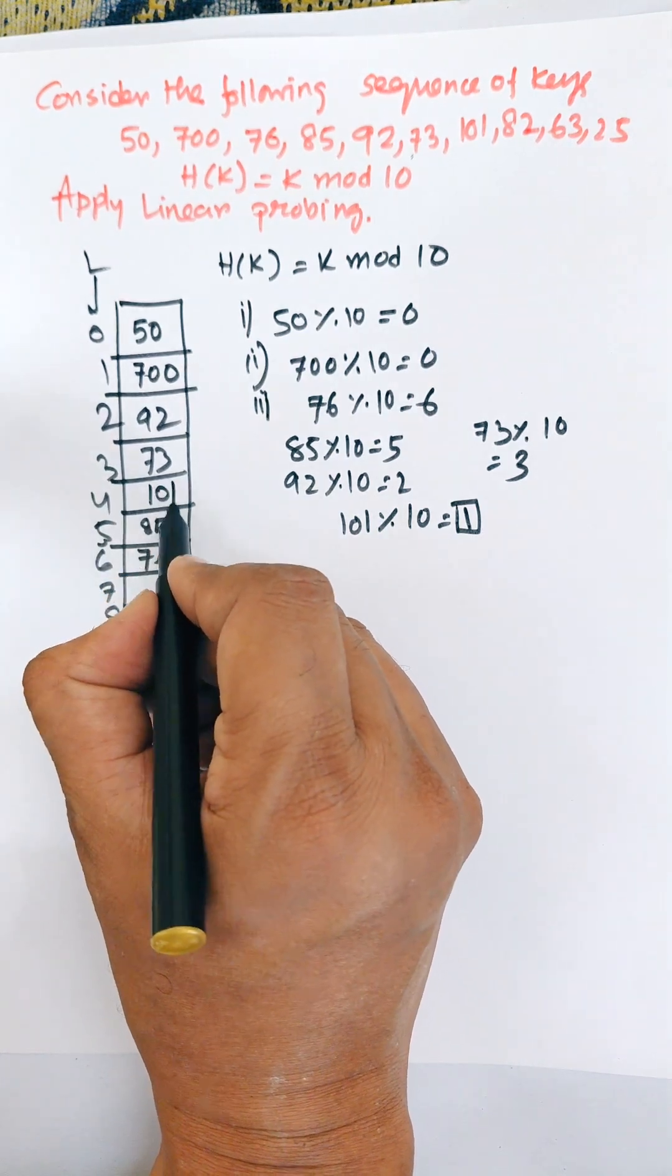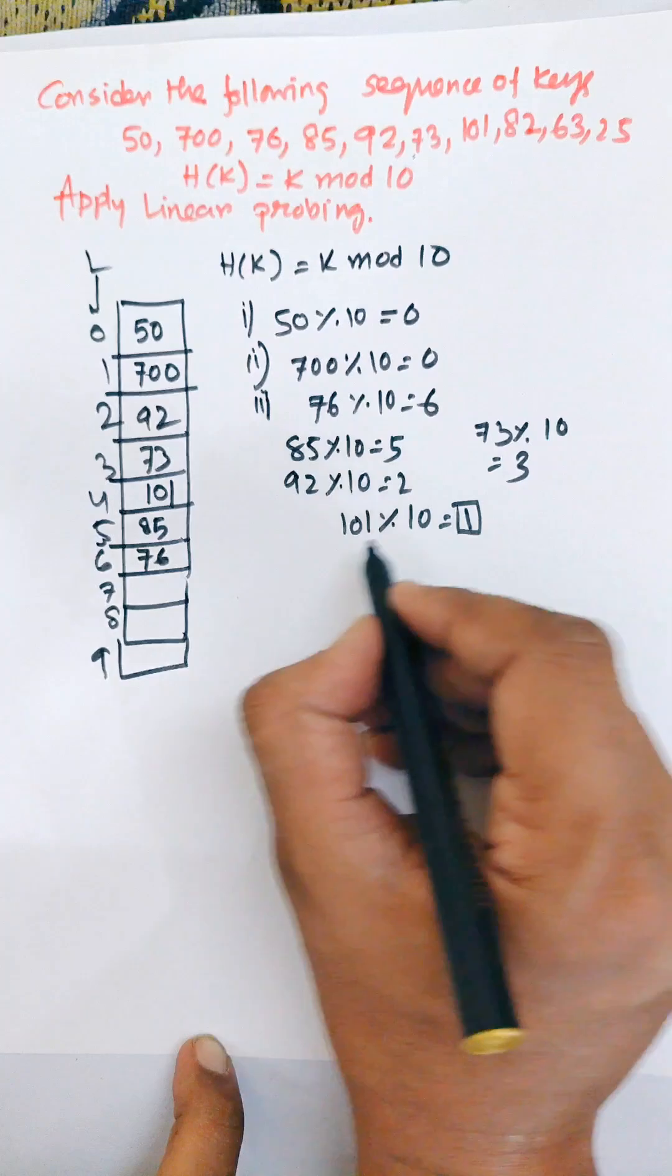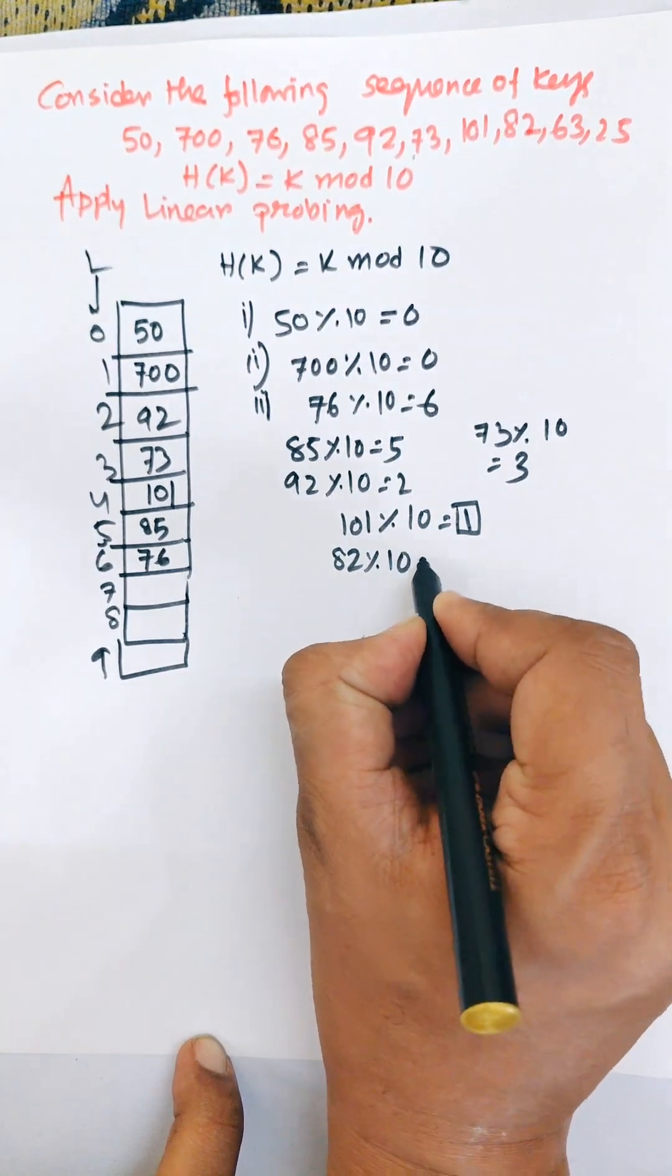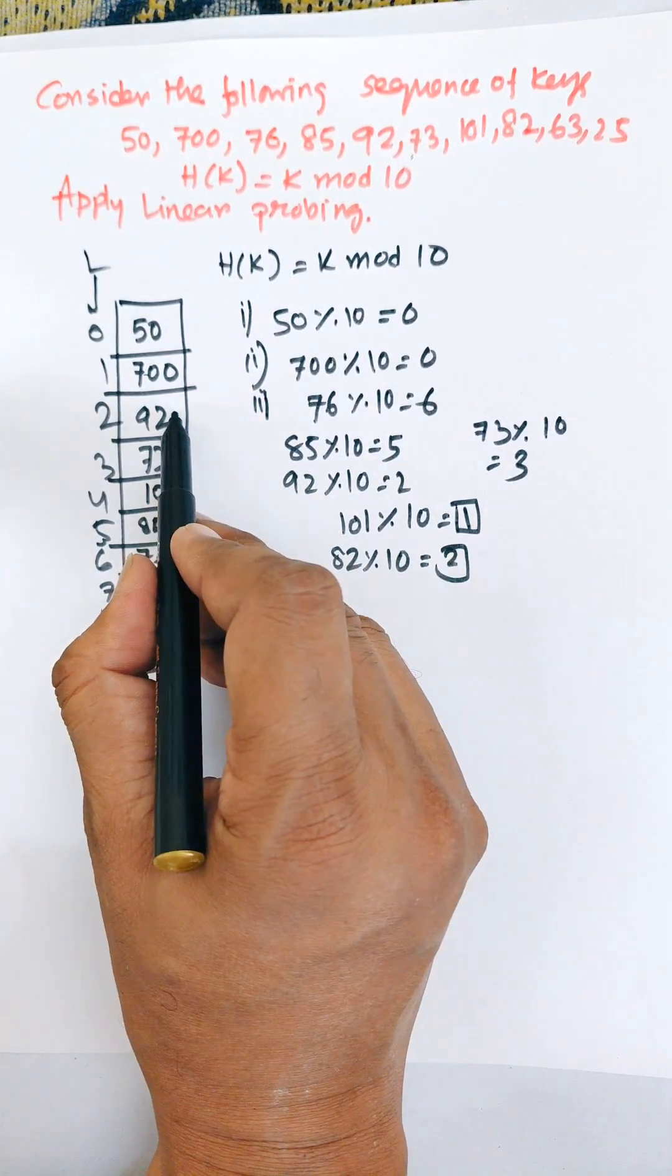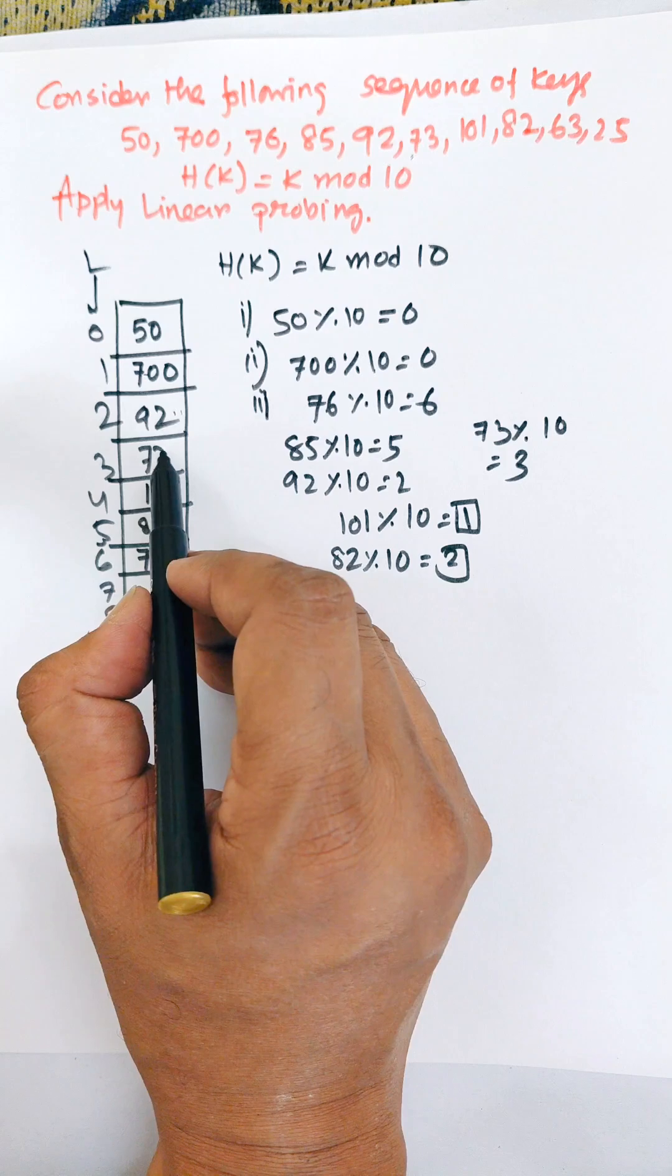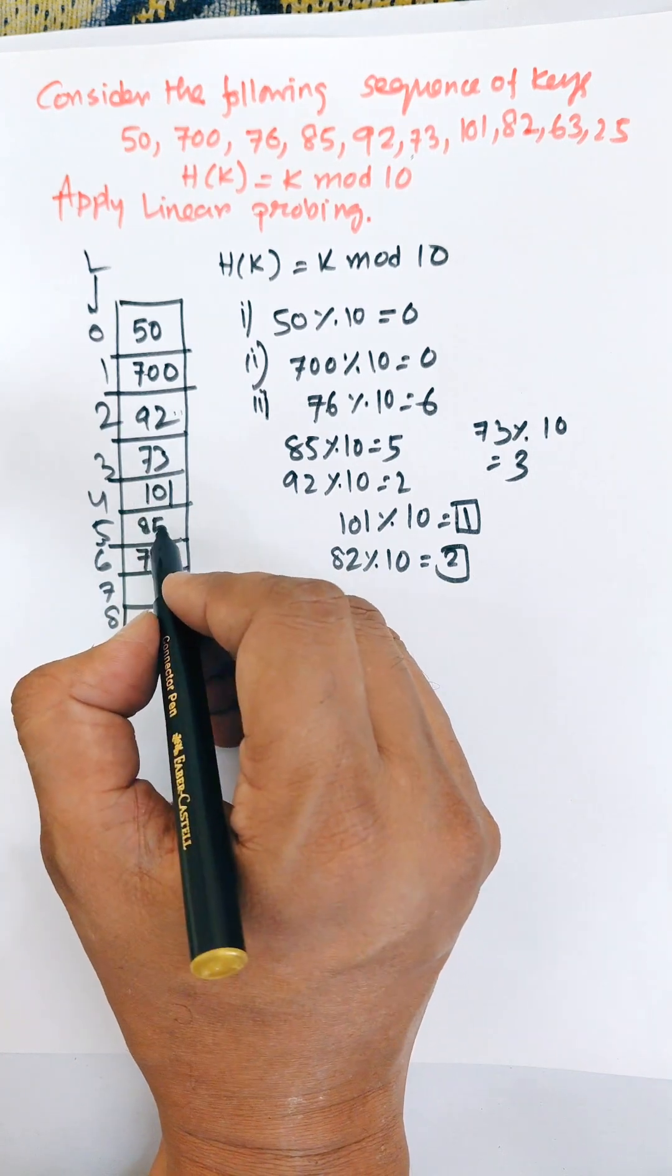Now 82 mod 10 is 2, but location 2 is already occupied. We find the next location, location 3 is occupied, 4 is occupied, 5 is occupied, 6 is occupied, so 82 will be allocated in location 7.